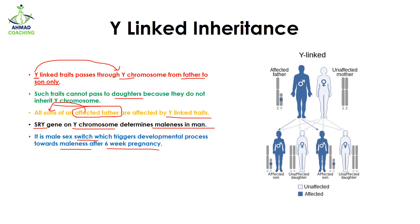For example, here we have a Y-linked trait. A father is affected — we can see that the Y chromosome is affected — while in the case of the mother there is no Y chromosome. After gamete formation, the Y chromosome is going to be transferred to all the affected sons, as we can see here, but no daughter is affected by the change in the Y chromosome.